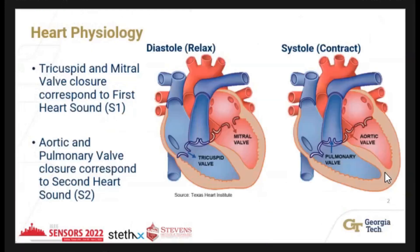Today I want to start by talking about heart physiology. The heart is a fluid mechanical system — essentially a muscle — with two main phases: a relaxed phase called diastole and a contraction phase called systole. The main concept is that it pumps blood in and out. When blood pumps into the heart, the tricuspid and mitral valves open, allowing blood into the system, and when those valves close, that creates a sound corresponding to the first heart sound.